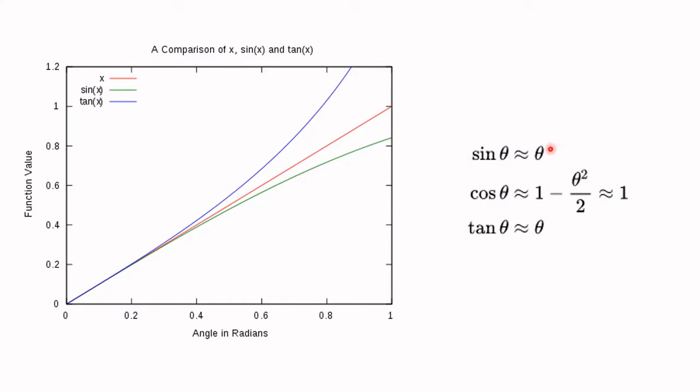For small angles, the sine of theta is approximately just theta, and the same is true for tangent — tangent of theta is also approximately just theta. The subsequent terms in the Maclaurin series for sine include odd powers of theta: theta cubed over three factorial, theta to the fifth. Those are much smaller than theta for small values of theta — if you take a very small number and cube it, it's even smaller.